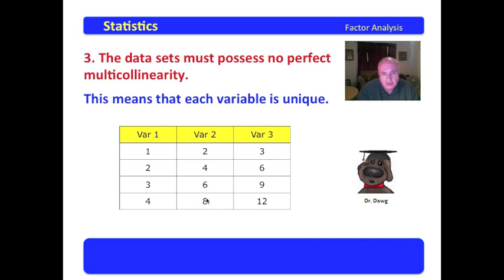You can produce variable set 2 by multiplying these values by 2. You can produce this set by multiplying the variables of number 1 by 3. Actually, what you have here is multicollinearity. These are, in fact, the same data sets just wearing a disguise. And this can't occur.